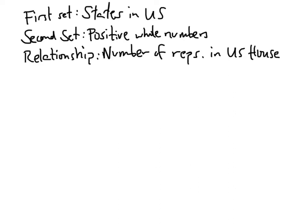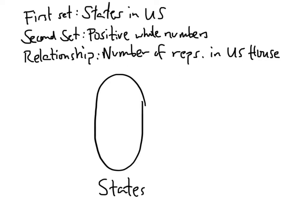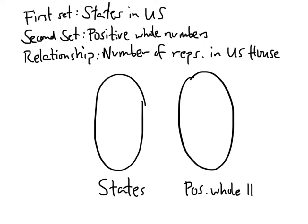We're going to represent this relationship by drawing bubble and arrow diagrams. We'll have one bubble on the left representing our states and one bubble on the right representing our positive whole numbers. We can fill in all 50 states on the left, but let's start with one particular state: Pennsylvania. 18 is one of our positive whole numbers.